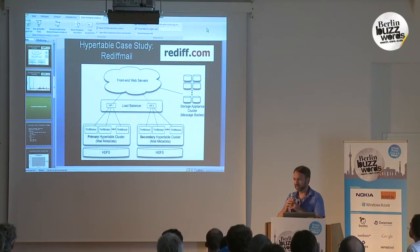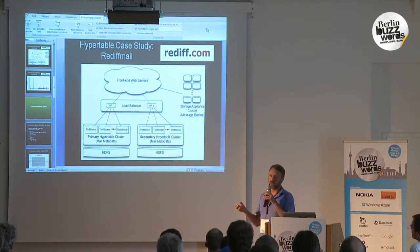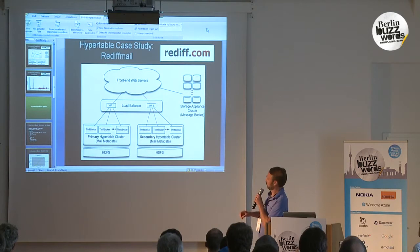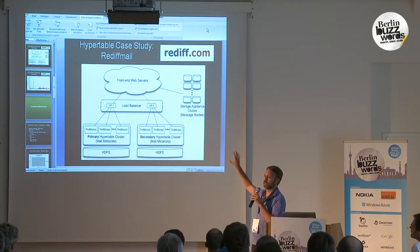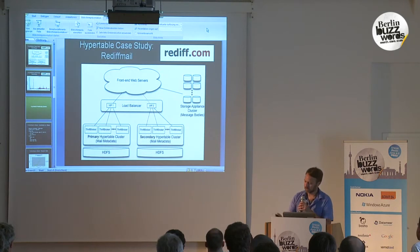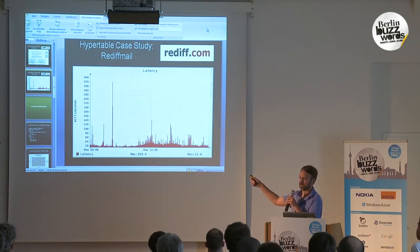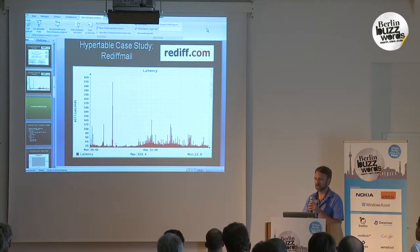Here's the Rediff Mail case study. Rediff Mail is one of the largest internet portals in India, and they run one of the top email services. They've got over 100 million users. They store all the metadata for their mail service in Hypertable. This is an average latency graph of their mail service over a one-day period, showing that Hypertable can deliver pretty good latency for live applications.